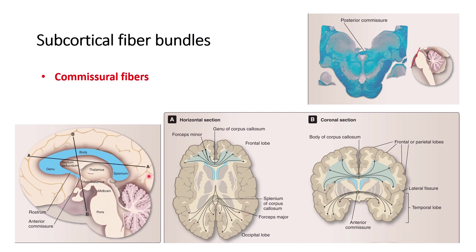In that posterior section, you can see the forceps major fibers, which are longer. The anterior commissure is located lower than the corpus callosum. There is also the posterior commissure, which is actually located in the midbrain — we are not talking about the midbrain here, but it is mentioned for naming purposes.